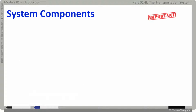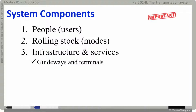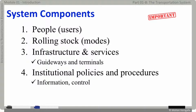Any course on transportation system involves the study of: people (the users of the system); rolling stock or travel modes like plane, rail, automobile, truck, ship, etc.; infrastructure and services which includes roads, tracks, bridges, terminal schedule services, and intermodal connections; and institutional policies and procedures which include information and control.